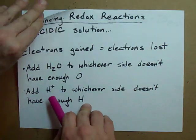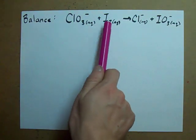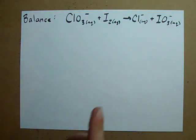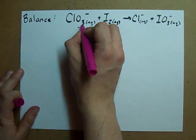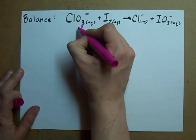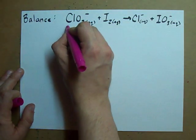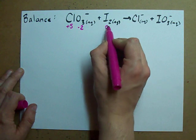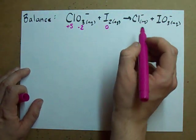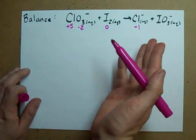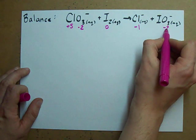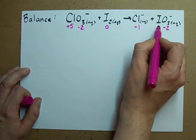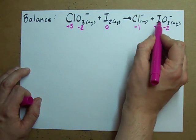I want you to balance this reaction. Chlorate plus iodine makes chloride plus iodate. First things first, assign oxidation numbers. Oxygen is always minus 2. That contributes minus 6. The total charge is minus 1, so the chlorine has to be plus 5. This is elemental iodine, so the oxidation number is 0. This is chloride with a charge of minus 1, so the oxidation number is minus 1. And in here, oxygen is always minus 2. That contributes minus 6. The total charge is only minus 1, so we need it to be plus 5 here.